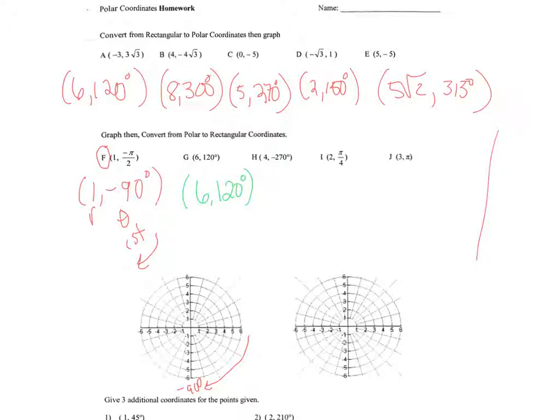So we swing down to that spot, and then we go to the pole, and we walk out r units. So we come out one unit, and that is where our dot is. So f is right there.